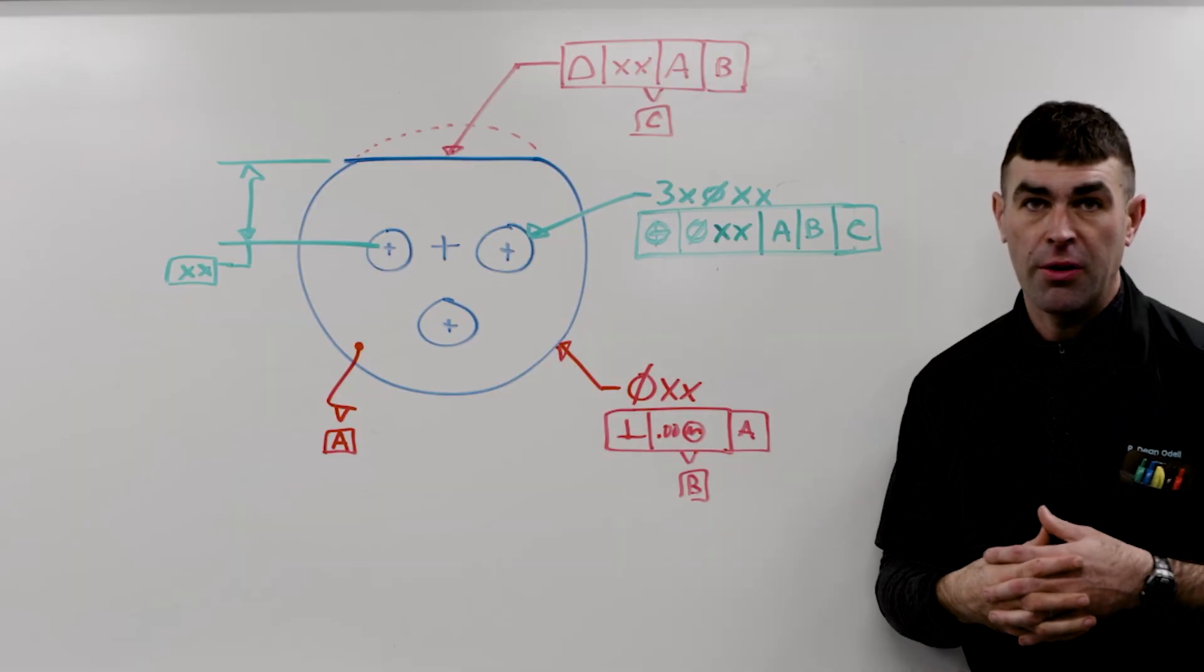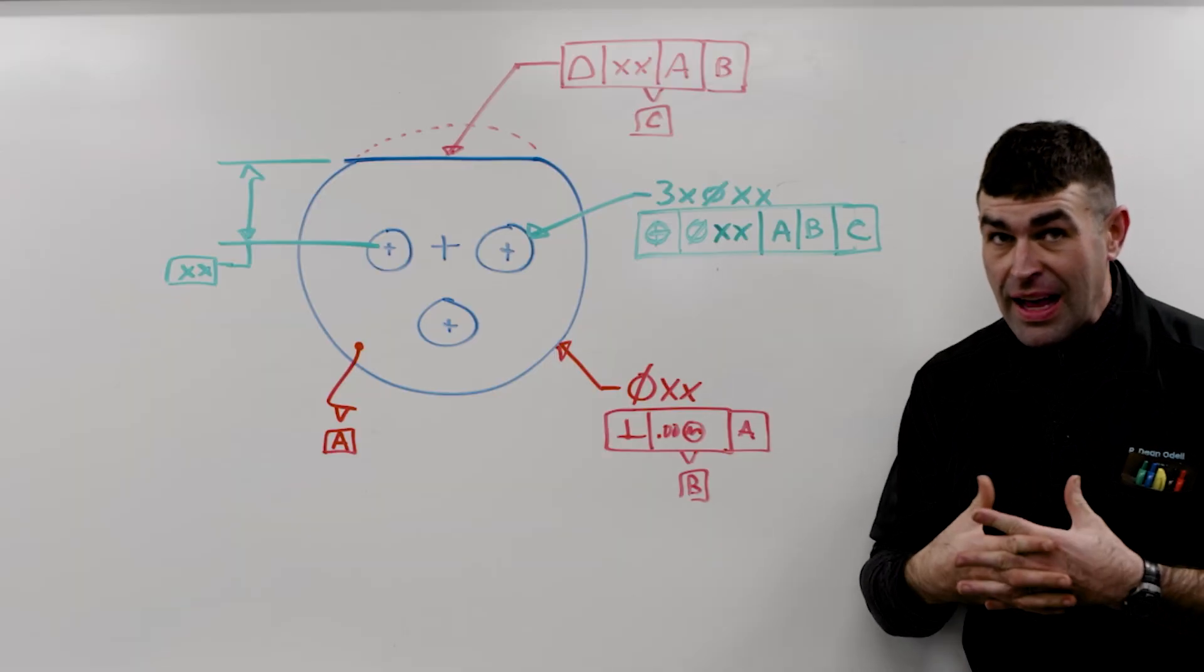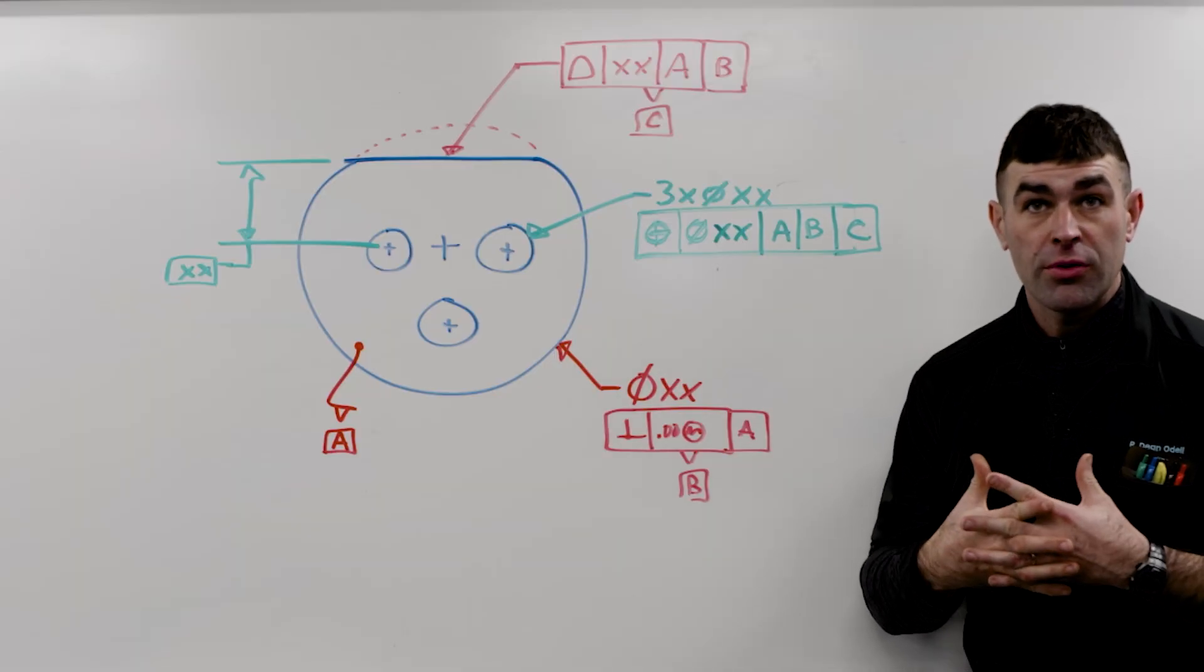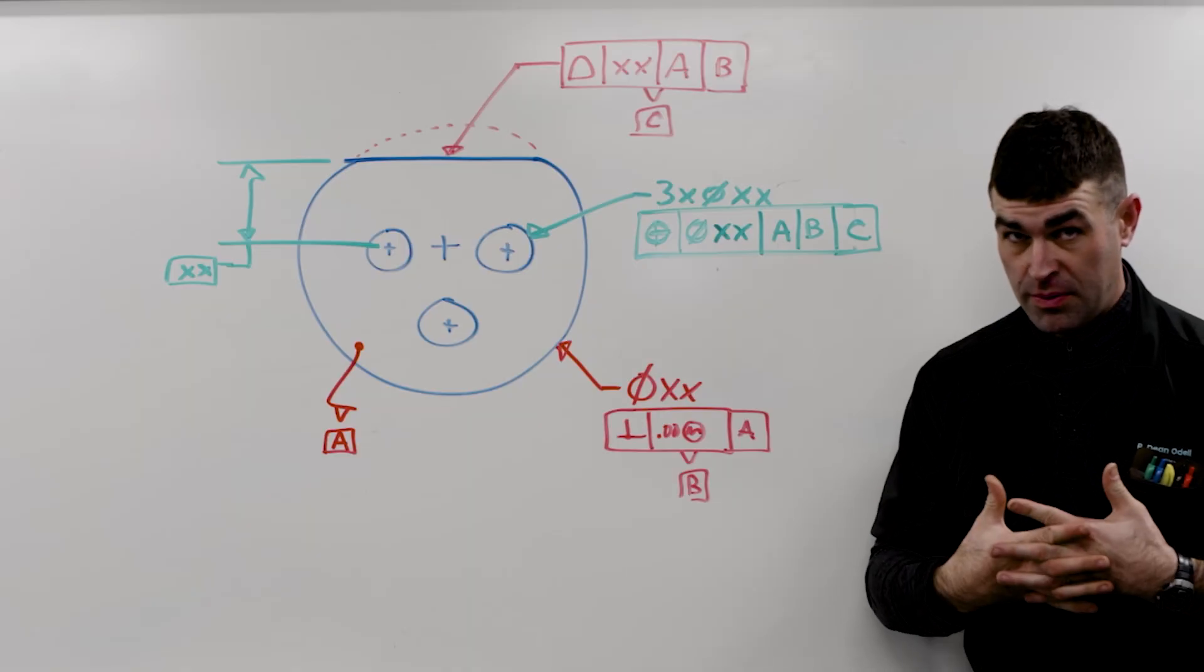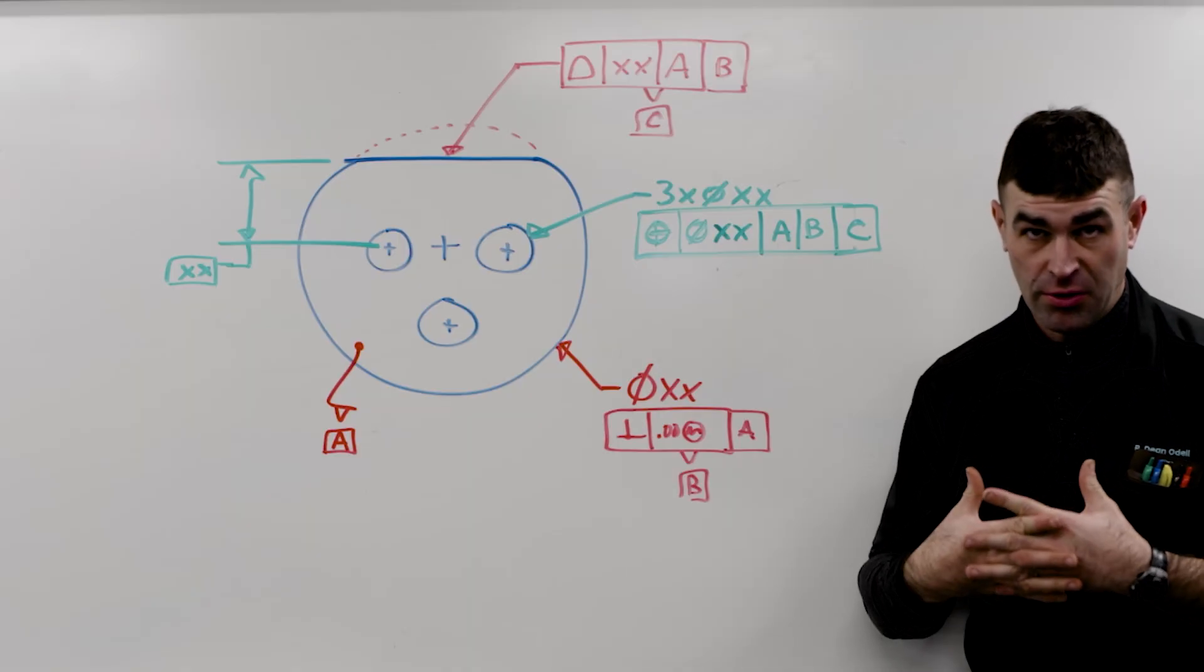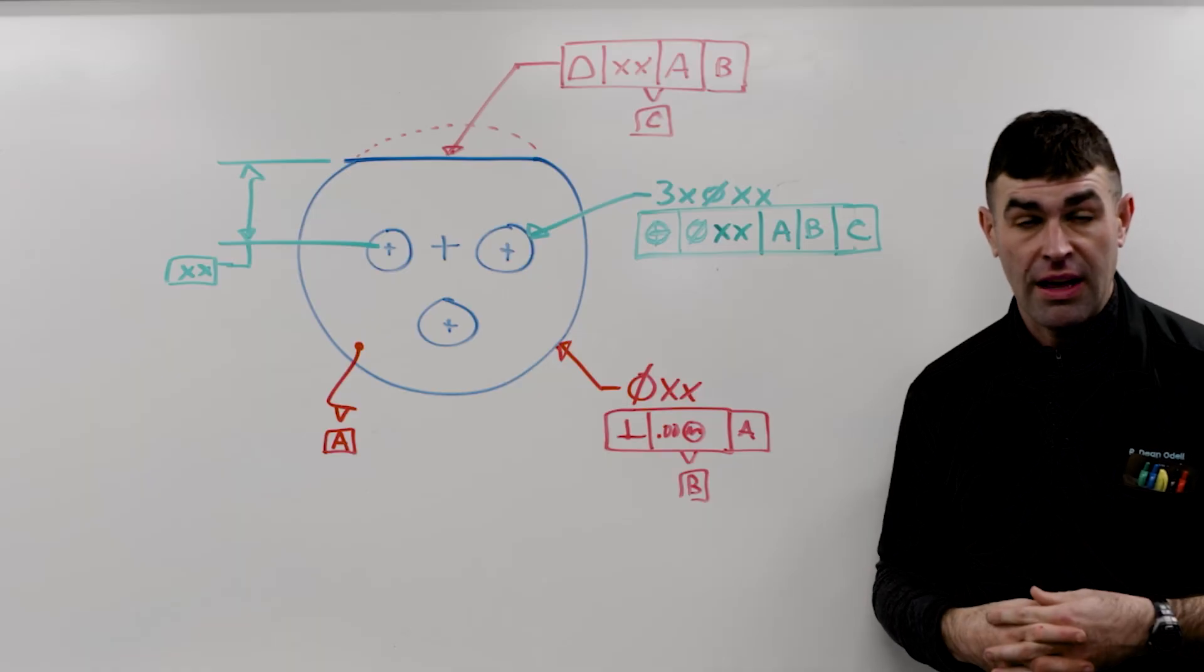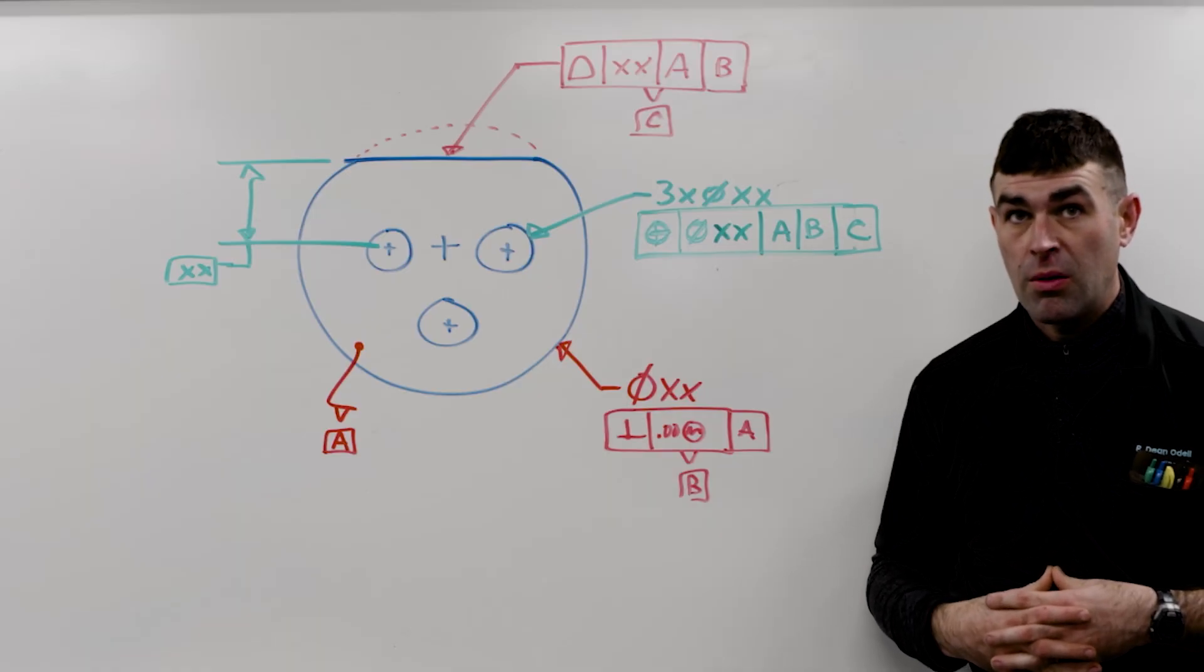C is a profile. It's a surface, it's not a feature of size. But there's one little quirk in Y14.5 where a profile of a surface in certain conditions can essentially have a material condition. Now, why is this?